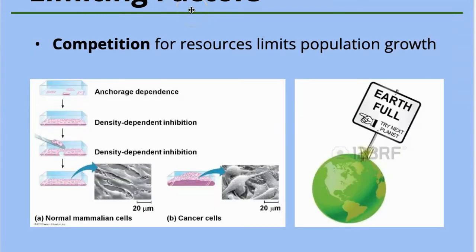The important thing of looking at density dependent and density independent factors is the idea of limiting factors. So limiting factors are going to limit the number of organisms or the size of a population in a given area. We can see that.